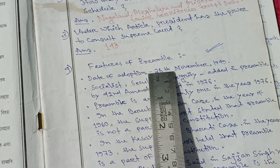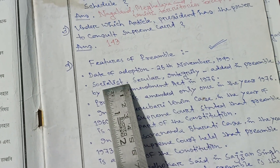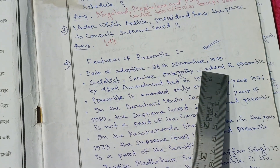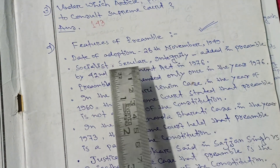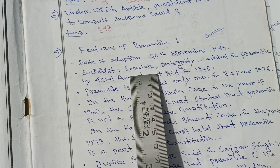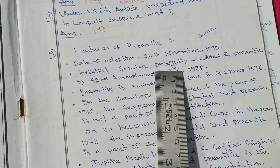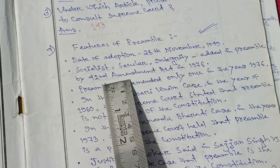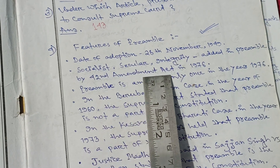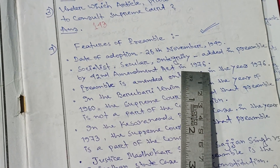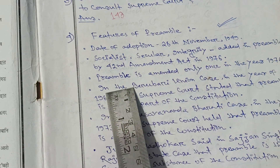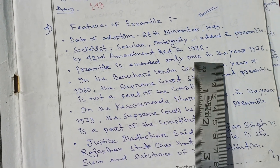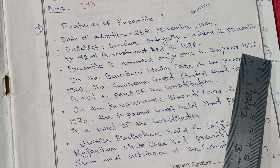Features of the Preamble. Date of adoption: 26 November 1949. The words 'Socialist' and 'Secular' and the word 'Integrity' were added to the Preamble by the 42nd Amendment Act in 1976. The Preamble has been amended only once, in the year 1976.